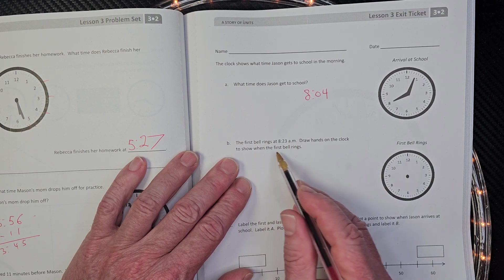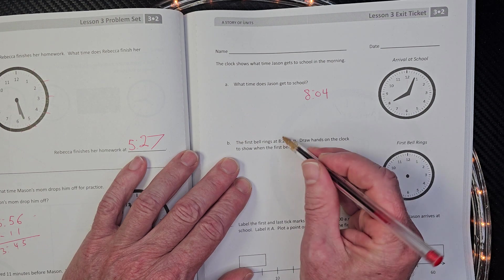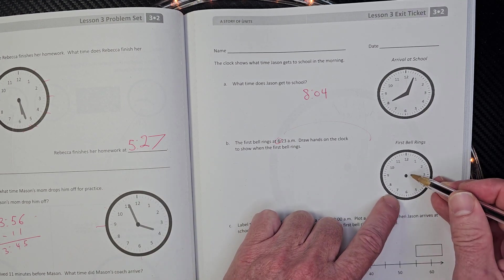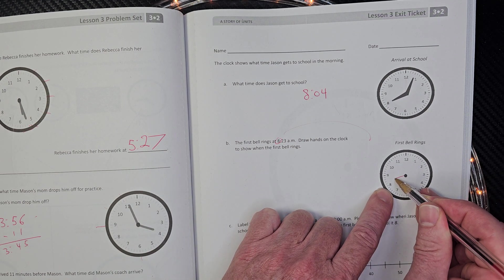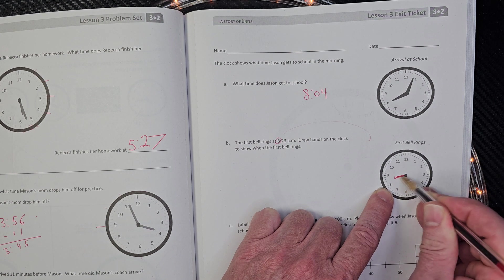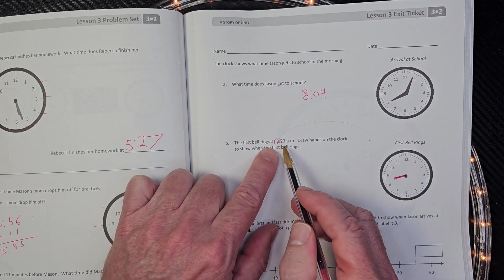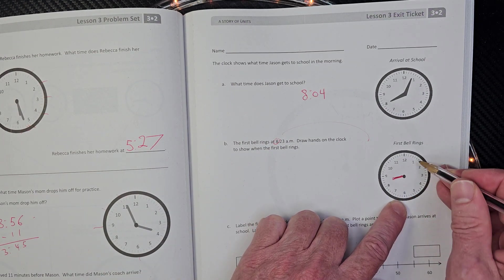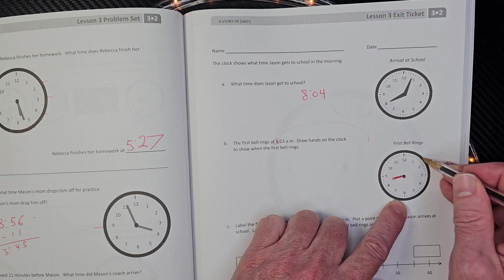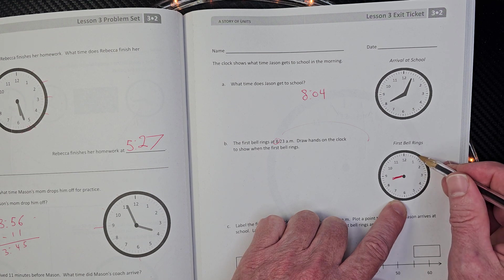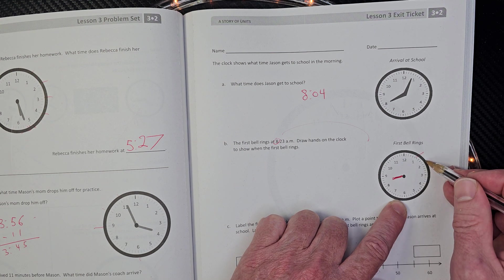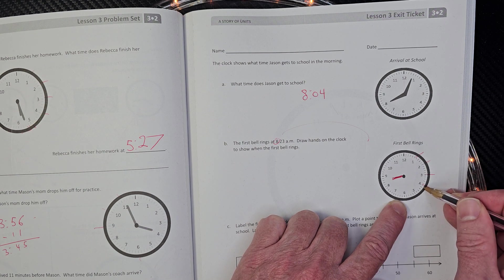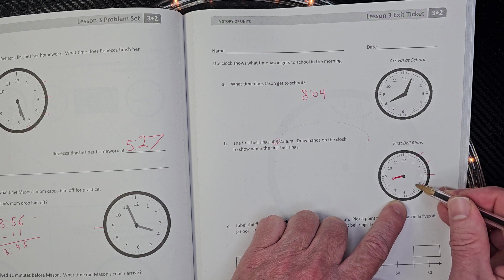The first bell rings at eight 23 AM. All right. So draw hands on the clock to show when the first bell rings. Remember eight is our lady hand. We do that first and it's not going to be right exactly on eight. It's going to be right about almost, almost in the middle. I said almost, almost twice tonight. And then because eight 30 would be right in the middle and then eight 23. So here's 30. Let's just go back here. Oh goodness gracious. These marks are really hard to see with my glasses. Five, 10, 15, 20, 21, 22, 23. Somewhere right in here.